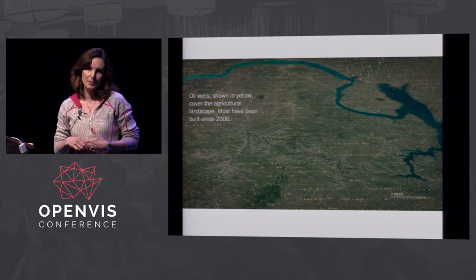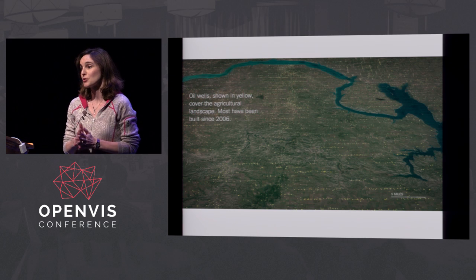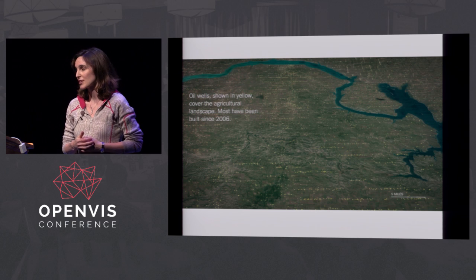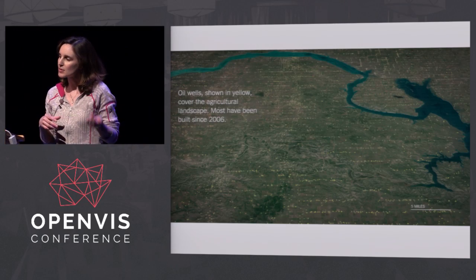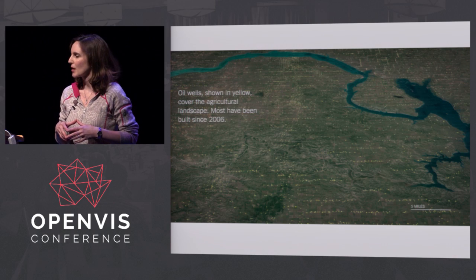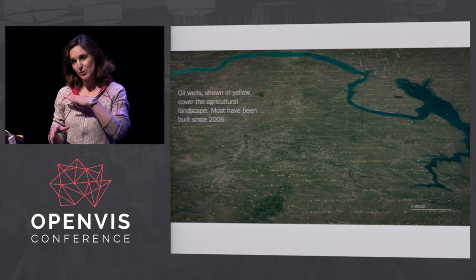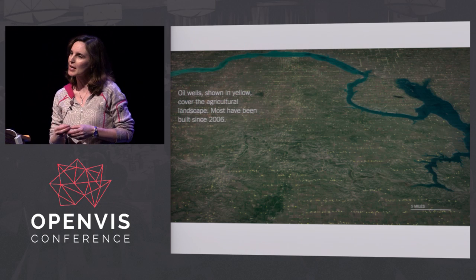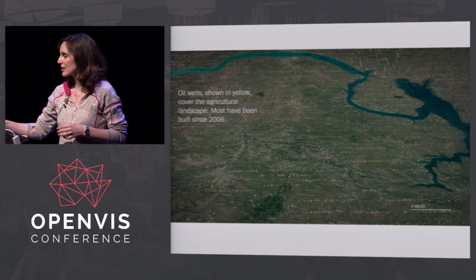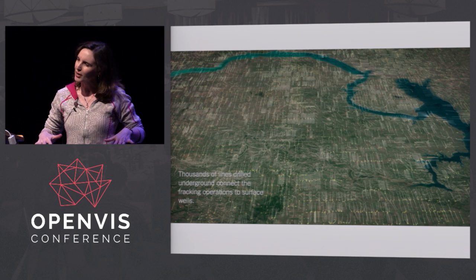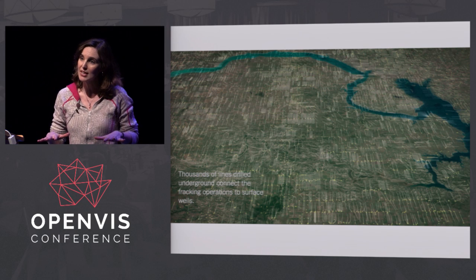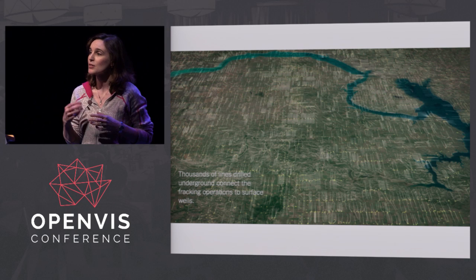This came from a project we published this fall on oil exploration in North Dakota, where I was fortunate to live for a couple of years as a teenager. We're looking at the landscape here — that's a very plain satellite image. We've color coded those yellows, which are all of the oil wells built since 2006. I wanted to be able to reveal those oil wells, and also reveal the infrastructure underneath the surface — the fracking drilling lines — making the invisible visible.